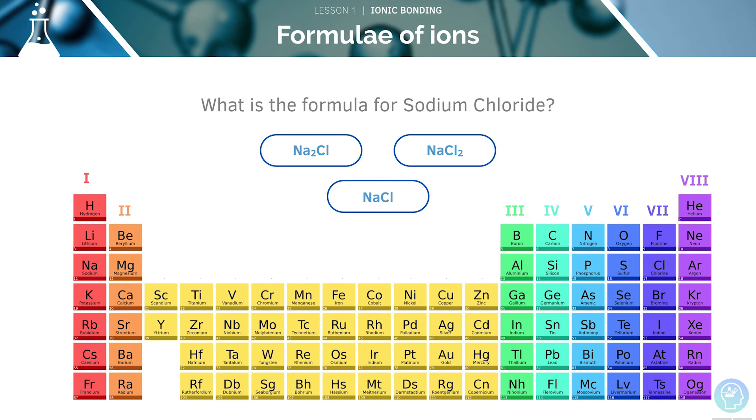The correct answer is NaCl, since Na has a plus 1 charge and Cl has a minus 1 charge. What is the formula for calcium carbonate? Since the potassium ion has a plus 1 charge and the sulfate ion has a minus 2 charge, the answer will be K2SO4.